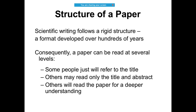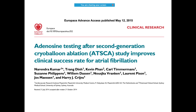Scientific writing has a fixed pattern which has developed over the past few hundred years. Once a paper is written, it will be assessed by the reader at different levels — some people will only read the title, some will read the title and abstract, and some will read the whole article.